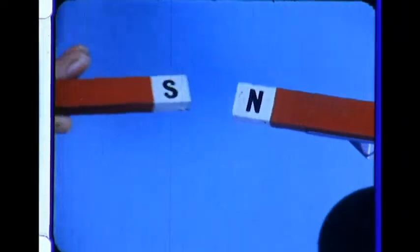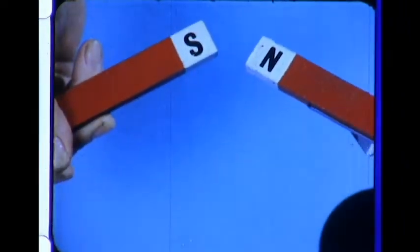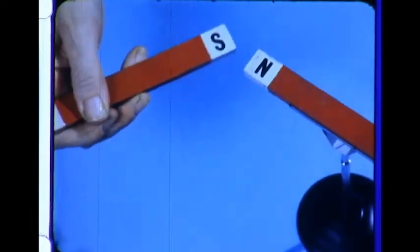So if poles are unlike, they attract. If they are alike, they repel. And the magnets do not have to touch each other in order to attract or repel.